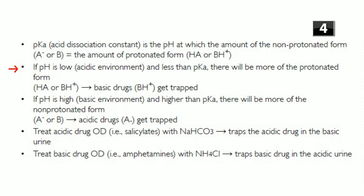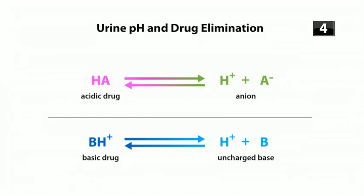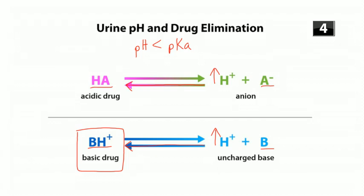If the pH is lower than the pKa, there will be more of the protonated form — more protons tip the scale toward protonation. So in acidic urine, both acidic and basic drugs are shifted toward the protonated form. Basic drugs get trapped in acidic urine because their protonated form is charged, while acidic drugs in their protonated form are not charged and can be reabsorbed.